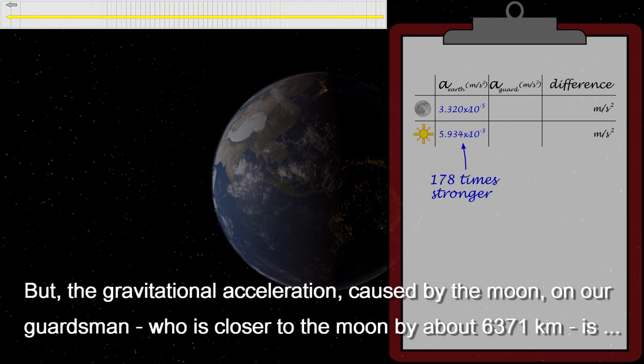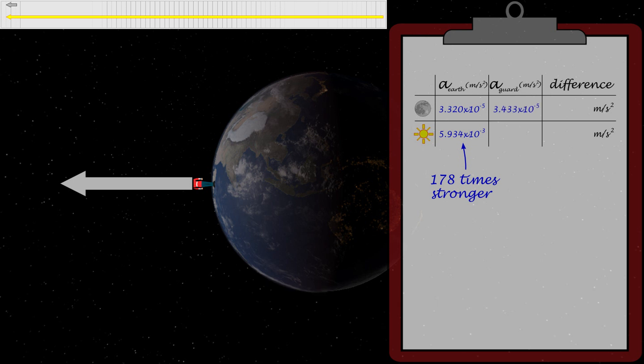But, the gravitational acceleration by the Moon on our Guardsman, who is closer to the Moon by about 6400 kilometers, is approximately 3.433×10^-5 meters per second squared.